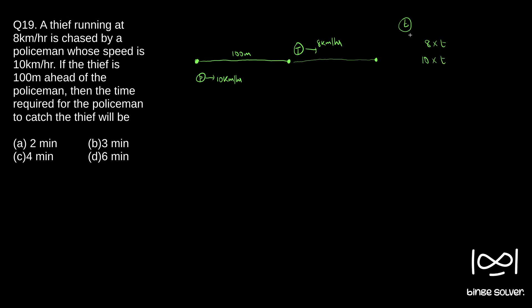The total distance the policeman ran is 10 times t, with t in hours. We know that 10t equals 8t plus 100, since the policeman covers the thief's distance plus the initial 100-meter gap. So 10t minus 8t equals 100, giving 2t equals 100.